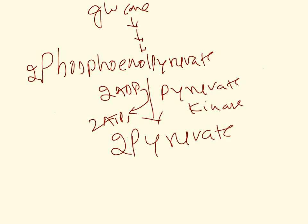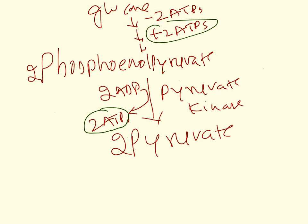Initially when glucose undergoes glycolysis, it spends 2 ATPs. In the phosphoglycerate kinase reaction it gets back 2 ATPs, and in the pyruvate kinase reaction it gets another 2 ATPs. So the gain is 4 ATPs, minus the 2 ATPs already spent, giving a net gain of plus 2 ATPs — this is the energy obtained from glucose to 2 pyruvate.